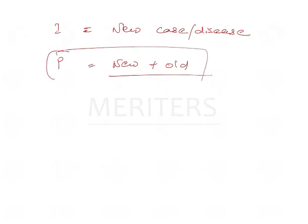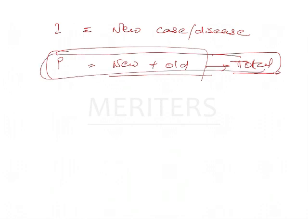So we will go into what is incidence and prevalence now. In layman terms, incidence means new cases or new diseases. Prevalence means new plus old, which means total. Whether it is new or old, prevalence is considered as the total number of cases.